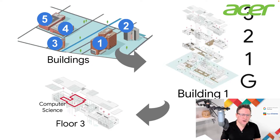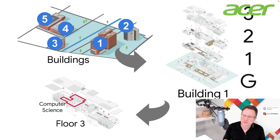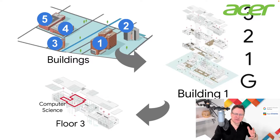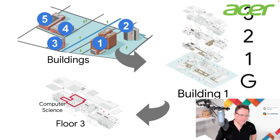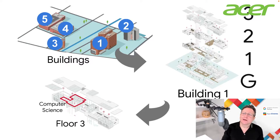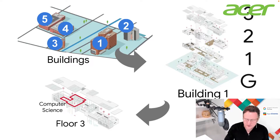If we think about a floor in the building — I've got floor three here — in floor three I've got an area called Computer Science, which is my computing science department. If you think about this as a school, college, or university, we've got a number of buildings on campus, with a number of floors, and within those floors we have particular designated spaces and areas.